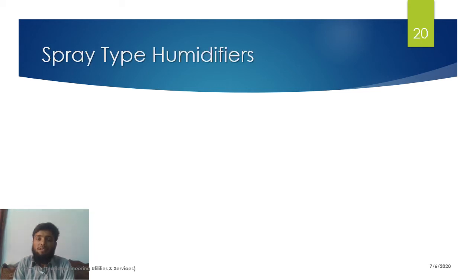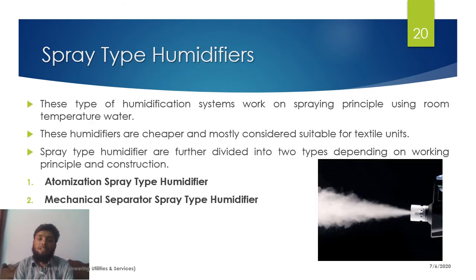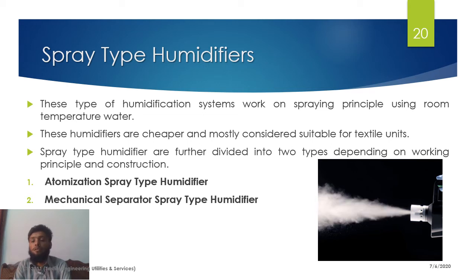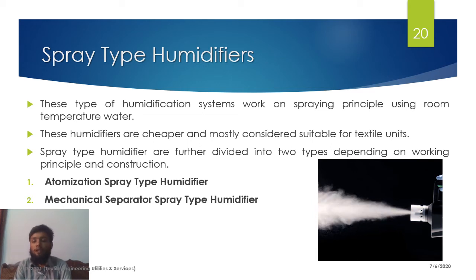The suggested humidification system for textile units is the spray type humidifier. These humidifiers use the spraying principle of room-temperature water to maintain optimum humidity in closed environments such as textile units. Spray type humidifiers are divided into two types based on working principle and construction: the atomization spray type humidifier and the mechanical splitter spray type humidifier.